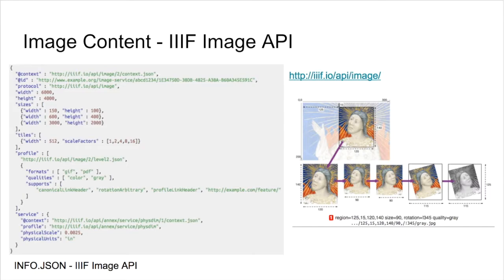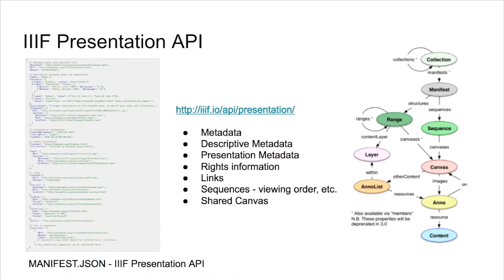The IIIF Presentation API takes interoperability further to allow for the transfer and sharing of information about an image, including descriptive metadata, structural metadata, rights information, related resources, and annotations. This way, users have access to more complete information to describe the images they are interacting with, especially title, table of contents, and sequencing information, if applicable, and any additional annotations related to the image.